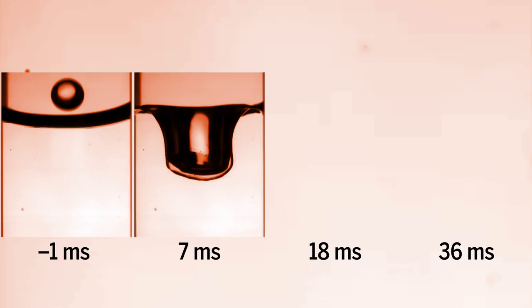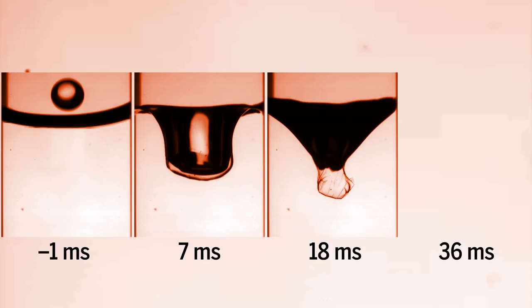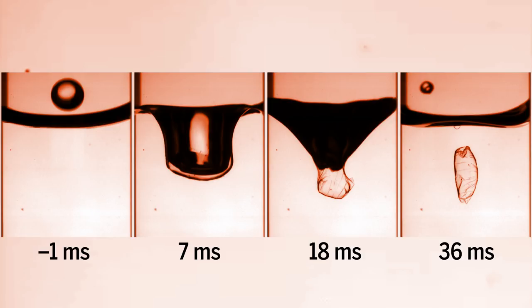This sequence of events happens very fast, in just milliseconds. Once the wrapped oil separates from the water surface, the capsule sinks under gravity.